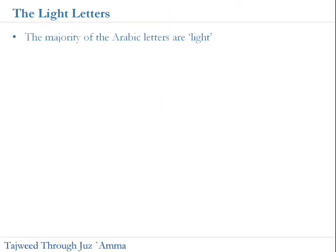Light and heavy letters. The majority of Arabic letters are what we call light letters, and that means that when they're pronounced, the back of the tongue is not raised. When we come to look at the heavy letters, we'll see that the tongue is really lifted up at the back of the mouth. So light letters essentially are the ones where the back of the tongue is not purposely raised.